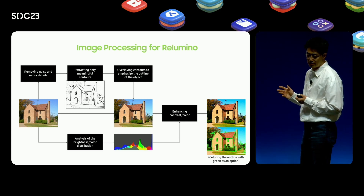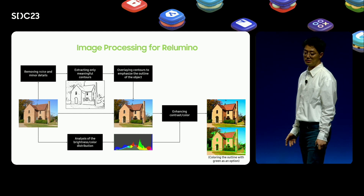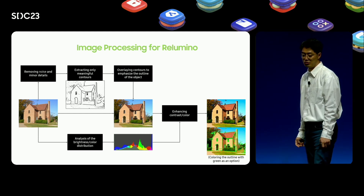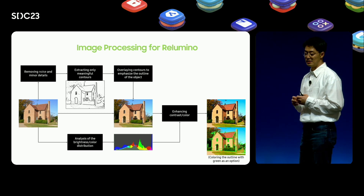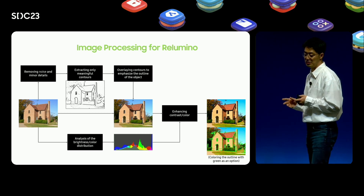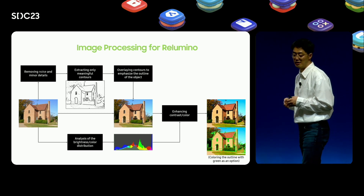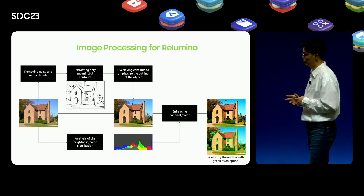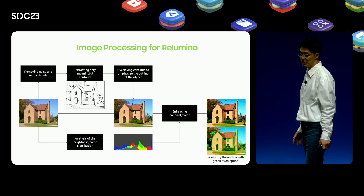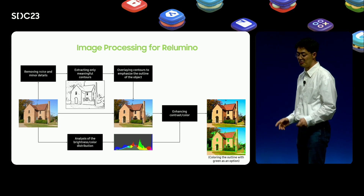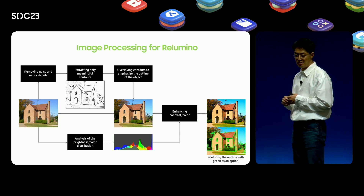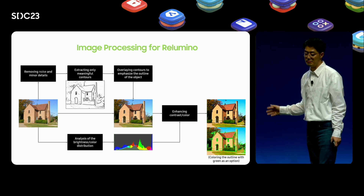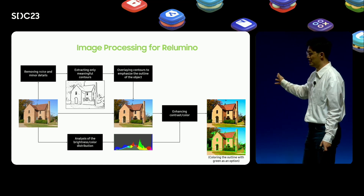Next, the contrast and color of the image are enhanced. To achieve this, the brightness and color distribution is analyzed and the enhancement gain is calculated for each image. After going through this process, you can obtain a Rilumino image that even people with low vision can recognize.